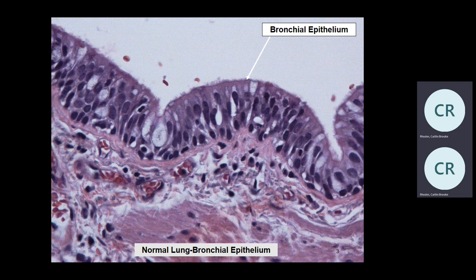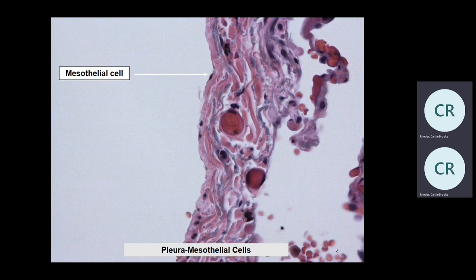In normal lung, there are no squamous cells. In elderly individuals — females in their 70s and 80s — I do see quite a bit of squamous metaplasia in the lung, which is not uncommon. Know your mesothelial cells: mesotheliomas arise from mesothelial cells, which line all the cavities in our bodies — pleural cavity, peritoneal cavities, scrotal cavities. So you can have malignant mesothelioma in the pleura, peritoneum, and also in the scrotal sacs.